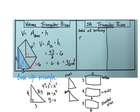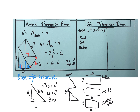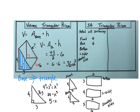So filling all this in: the front and back triangles each have area 4 times 3 divided by 2, which is 6. The bottom rectangle is 3 times 6, which is 18. The left side is 4 times 6, which is 24. The slanted side is 5 times 6, which is 30. Adding all that up — 6, 6, 18, 24, 30 — I end up with 84 units squared. That is the surface area.